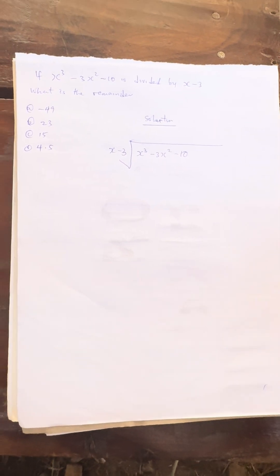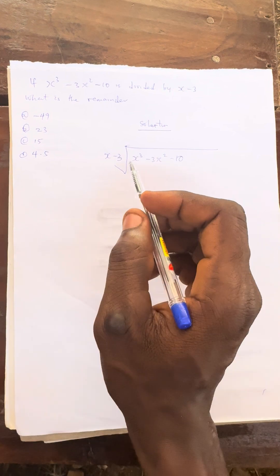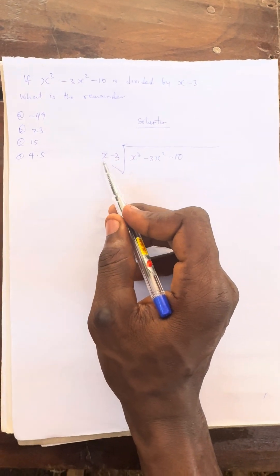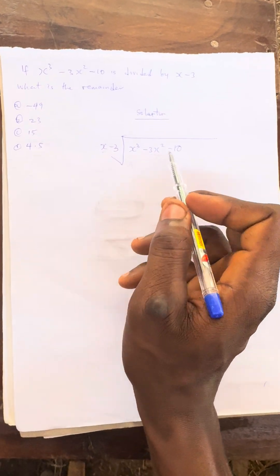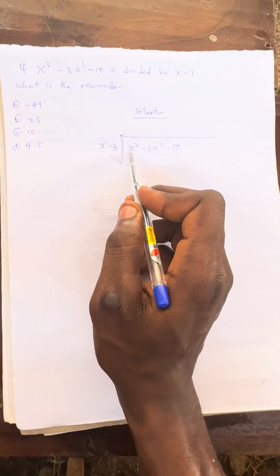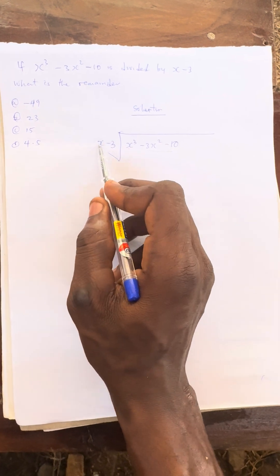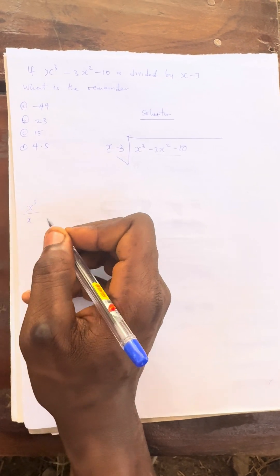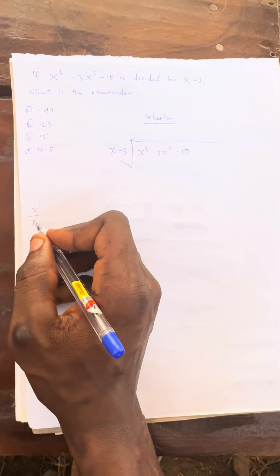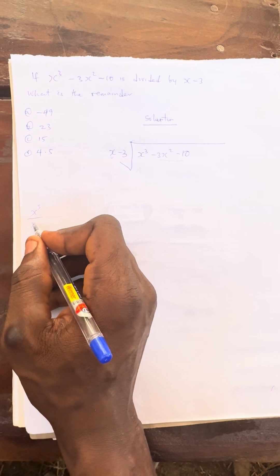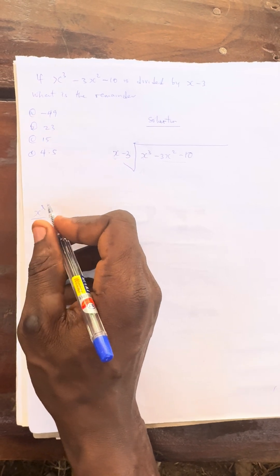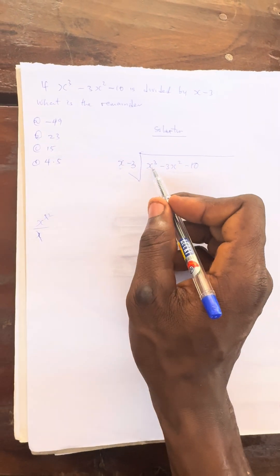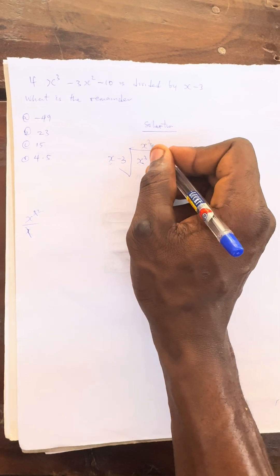We'll now be dividing each one after the other. The only thing you are going to be using is this x — you'll be using this x to divide. x cubed divided by x is like saying x cubed over x. You can see that this is 1x cancelling one of the x's here, so it remains 2. So x cubed divided by x will be x squared.